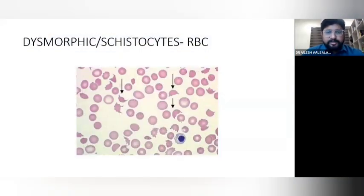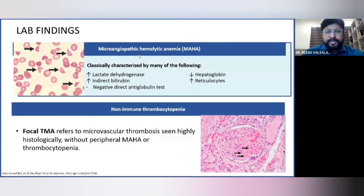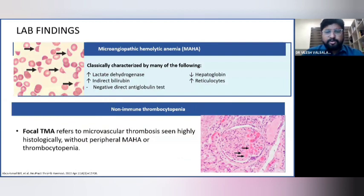This picture shows dysmorphic RBCs, also known as schistocytes. In lab findings for microangiopathic hemolytic anemia, we have high lactate dehydrogenase level, high indirect bilirubin, negative Coombs test, decreased haptoglobin, increased reticulocyte count, and non-immune thrombocytopenia. In patients who present without MAHA or thrombocytopenia, we call them focal TMA, which is detected by histology.